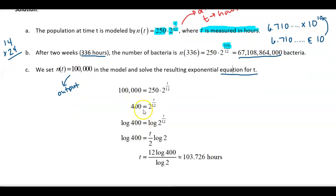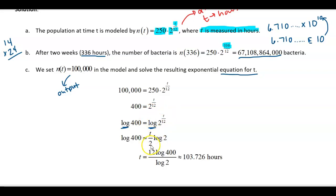One method is to take the logarithm of both sides — you can always do that as long as you use the same type of logarithm on both sides. Then use logarithm properties to bring the exponent down to the front. Note there's a typo in the notes — it should be 12 there. Continue solving for t by multiplying both sides by 12 and then dividing by log of 2.